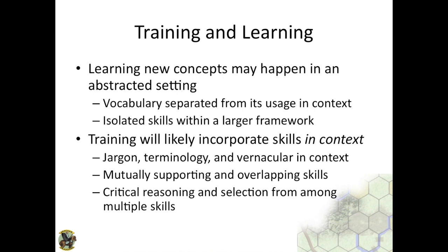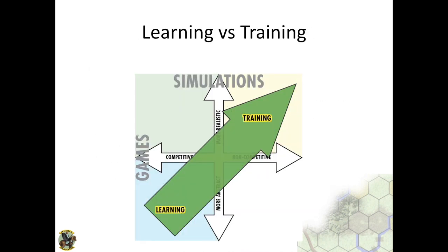As we talk about moving from learning in abstracted settings to training in more complex settings, we're moving from abstract competitive game environments up toward more realistic, higher-fidelity simulations. But we may move away from competitive environments to non-competitive ones, simply because there are too many factors to account for at those levels of complexity. At that point, competition may not be necessary to reinforce the learning effects we're after.